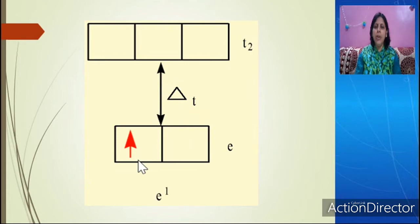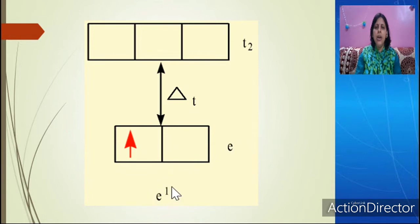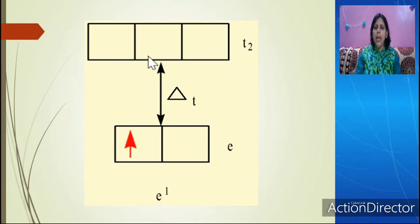We will have electrons filling one by one in different configurations. This is the D1 configuration where the single electron will go to the E set, because all the rules will be followed for the electronic configuration — the Aufbau principle, Hund's rule, and Pauli exclusion principle. The electron goes to the lower energy orbital and the electronic configuration becomes E1. So this is the D1 configuration where the tetrahedral complex has E1 configuration as per crystal field theory.